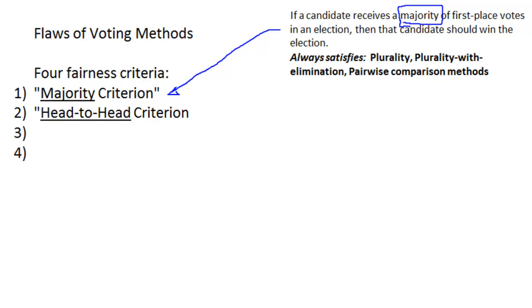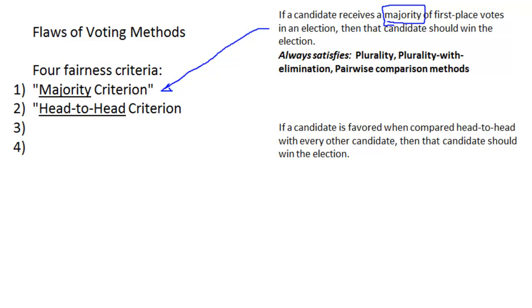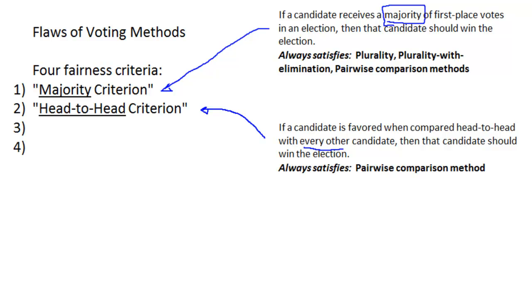The second fairness criterion is called the head-to-head criterion. This criterion works like this: if a candidate is favored when compared head-to-head with every other candidate, then that candidate should win the election. This criterion conjures up the idea of pairwise comparison — a head-to-head comparison. This criterion always satisfies the pairwise comparison method, but that's the only one it reliably satisfies. The others may or may not be satisfied.